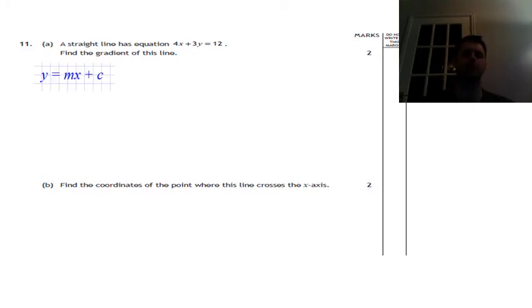The best way to do it here is actually to think about our general equation. Again, y equals mx plus c. And remember the m stands for gradient. So if we can rearrange this equation and make y the subject of the formula, remember that means on the left hand side by itself, then we can find what the gradient is.